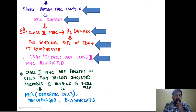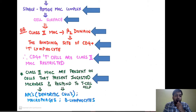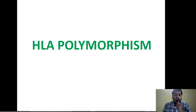CD4-positive T cells are class 2 MHC restricted, whereas CD8-positive T cells are class 1 MHC restricted. Class 2 MHC molecules are present on antigen presenting cells — mainly dendritic cells, macrophages, and B lymphocytes — unlike class 1 MHC which is present on all nucleated cells.